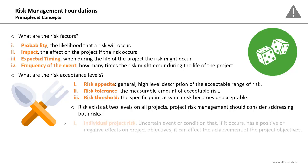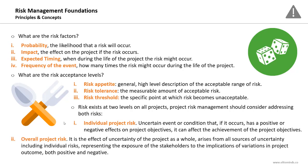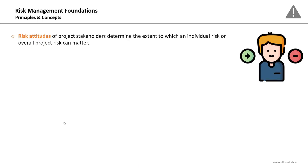Risk management should address two levels of risk. Individual project risk is an uncertain event or condition that if it occurs has a positive or negative effect on project objectives. Overall project risk is the effect of uncertainty on the project as a whole — it arises from all sources of uncertainty, including individual risks, and represents the exposure of stakeholders to variations in project outcome, both positive and negative.